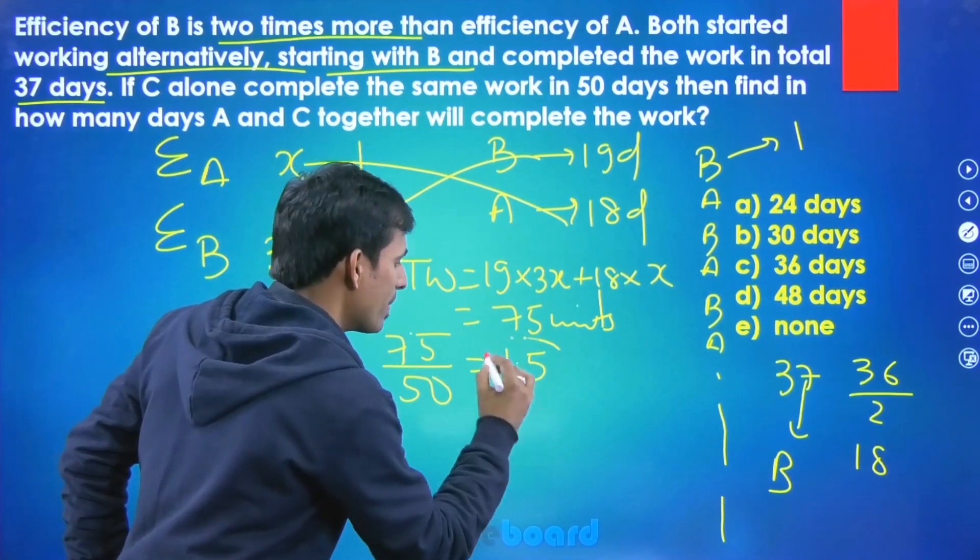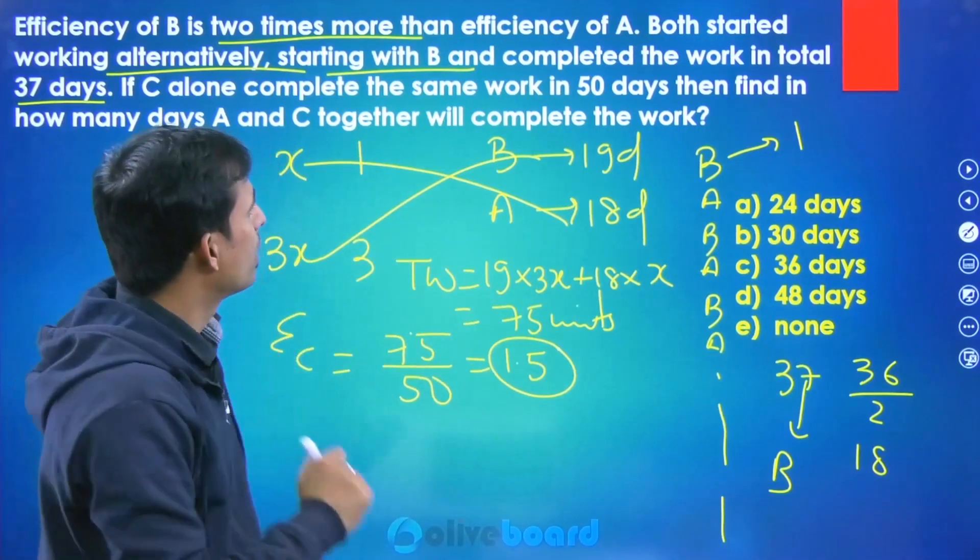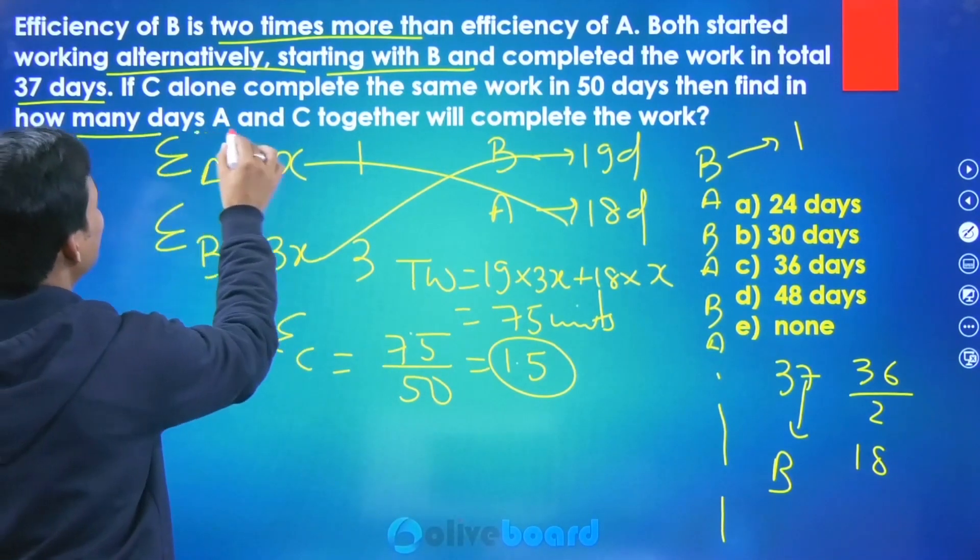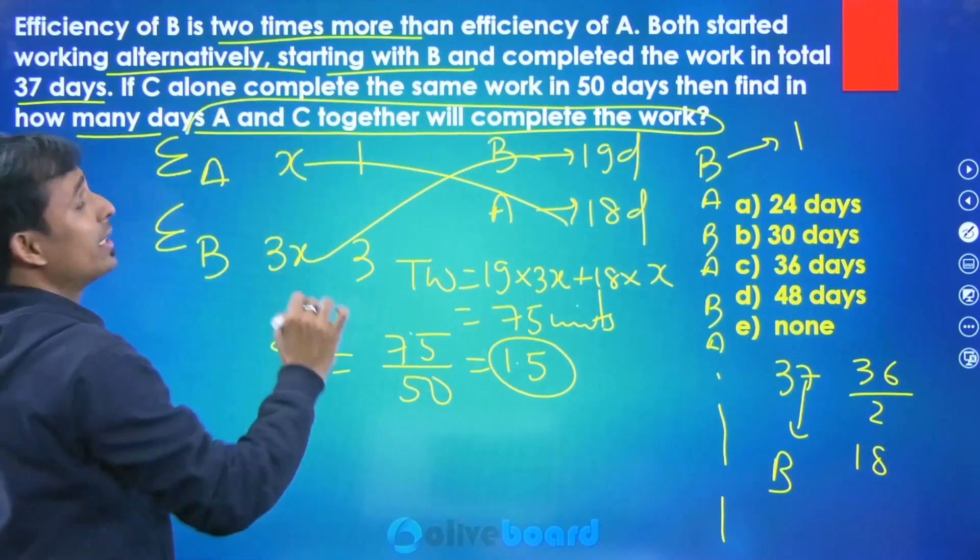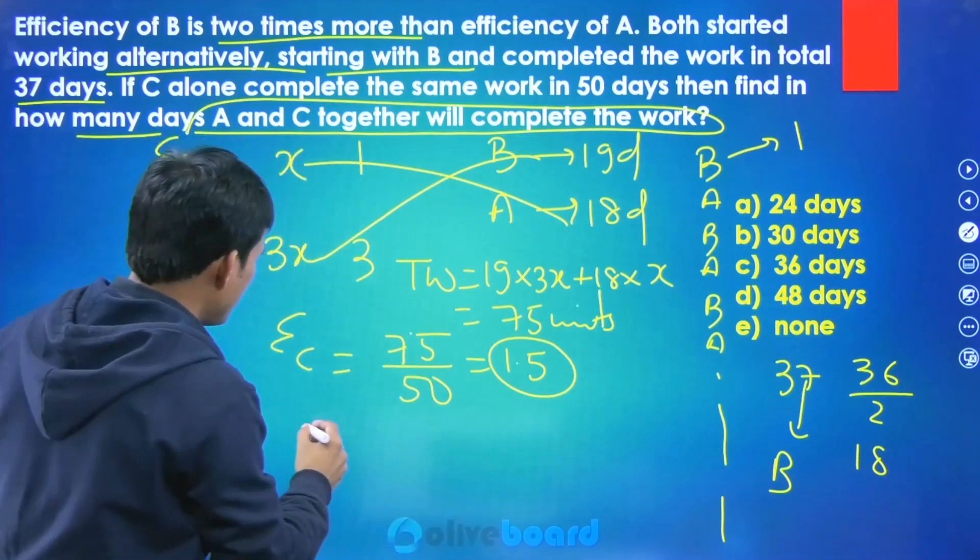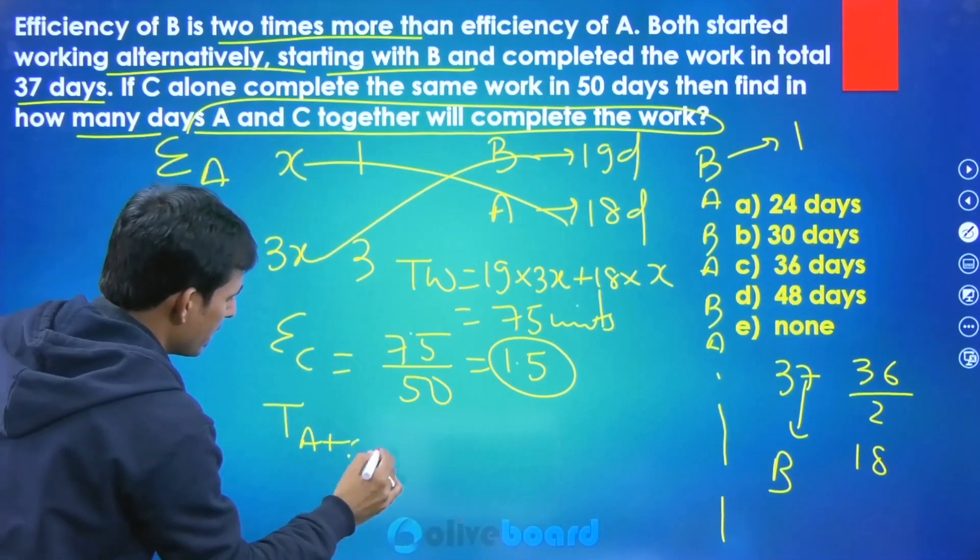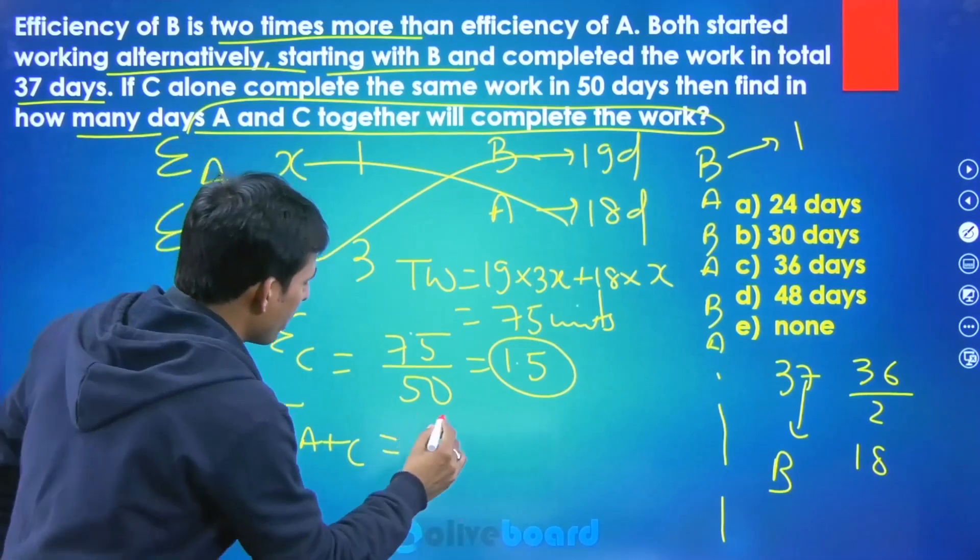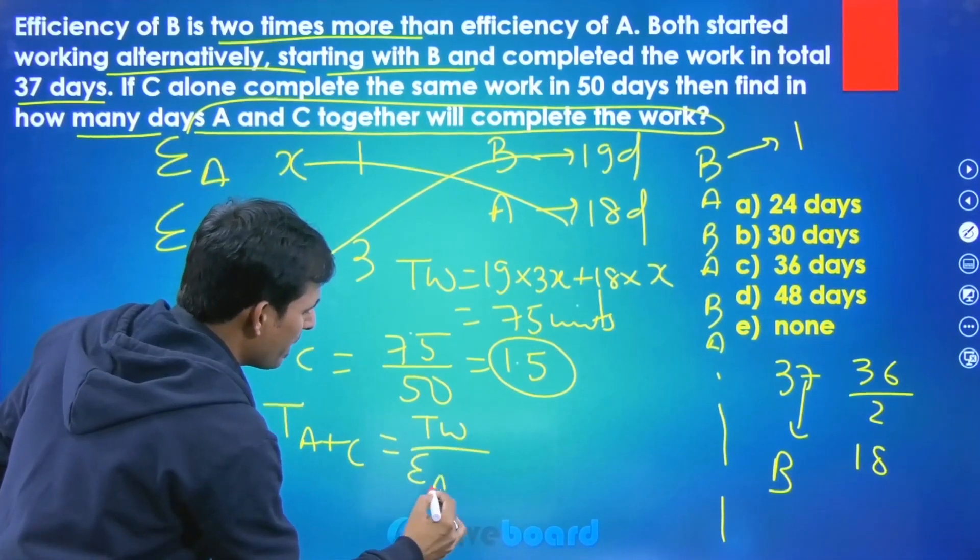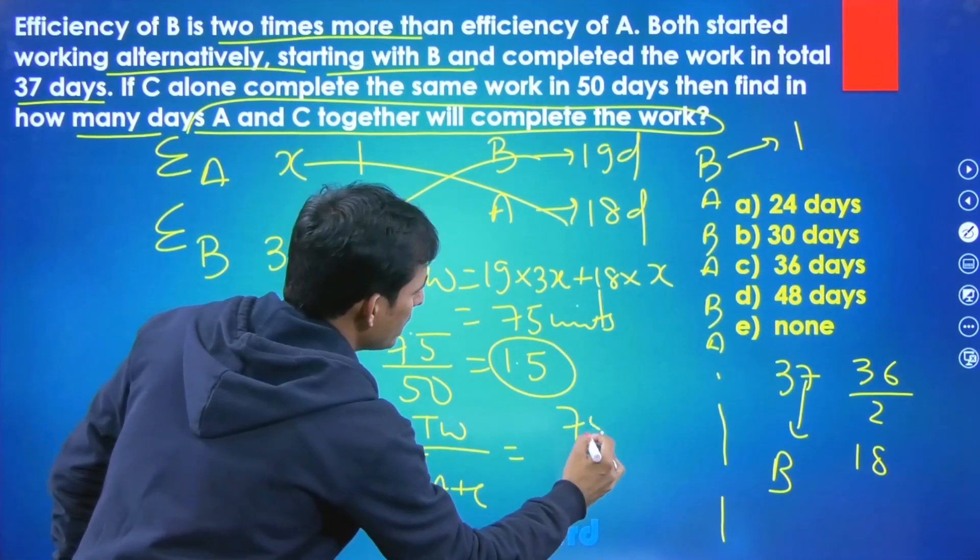Now question kya bola, in how many days A and C together to complete the work? A and C, it means time taken by A and C. What is time? Time is simple, total work upon efficiency of A and C, correct. So total work in this question is like 75, but A and C, so C is 1.5, but what is A? Efficiency of A simple one or x.